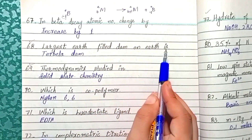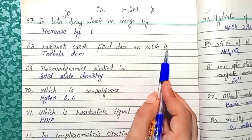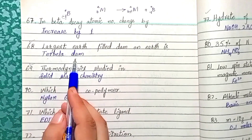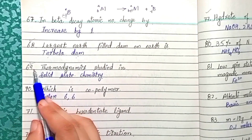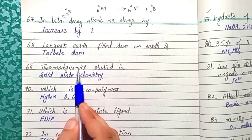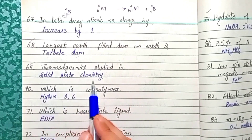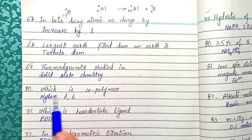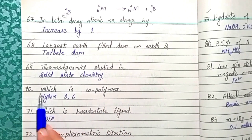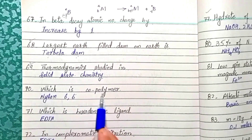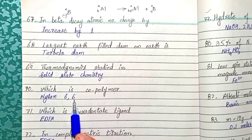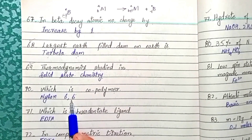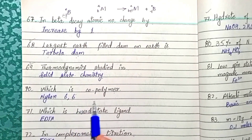Question 68: The largest earth-filled dam on Earth is Tarbela Dam. Question 69: Thermodynamics is studied in solid-state chemistry. Question 70: Nylon 6,6 is a copolymer. All other polymers listed were made from the same type of monomers, so Nylon 6,6 is the correct answer.